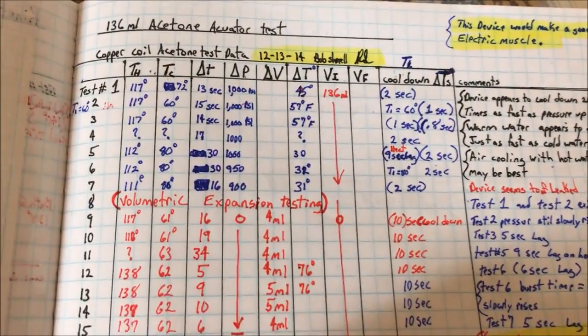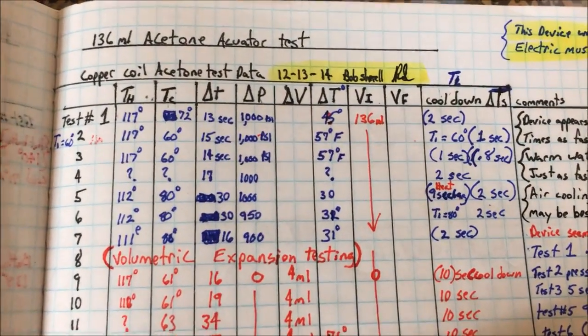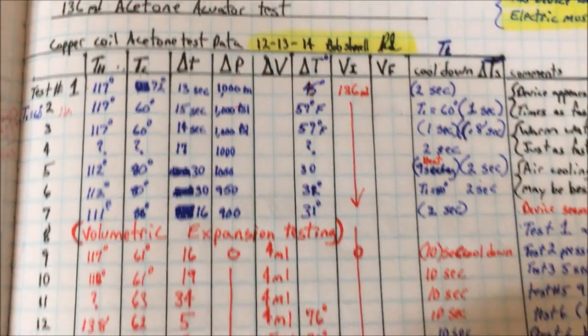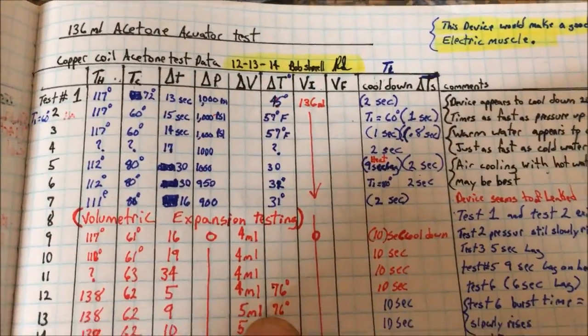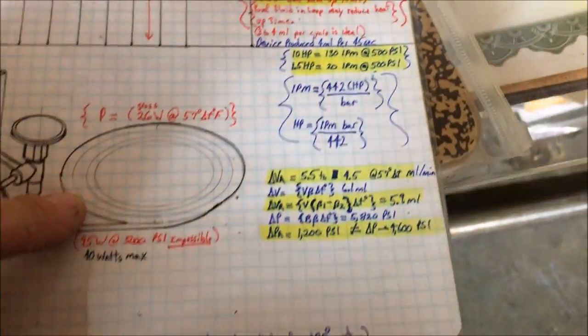This is a neat little device I have a video on, an acetone expander. You can see here some of the attributes: we got a thousand PSIs out of that little bad boy, not very much on the flow rate though.